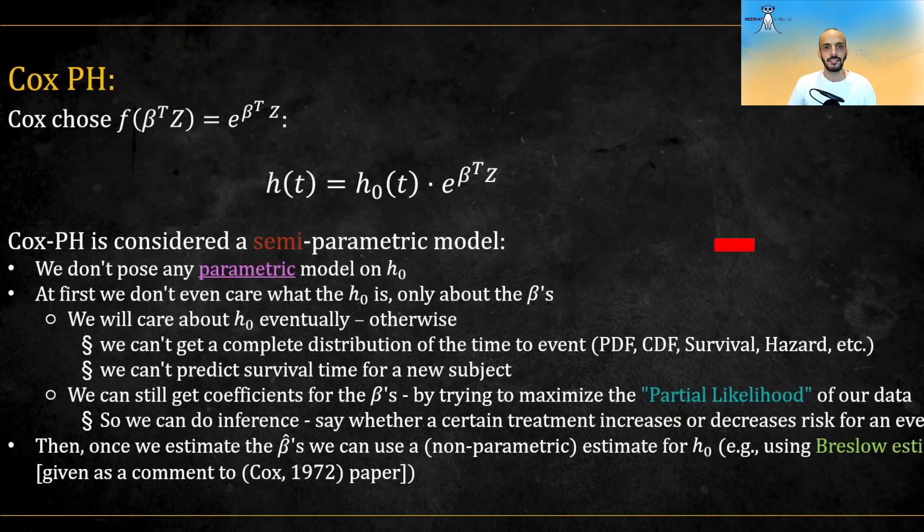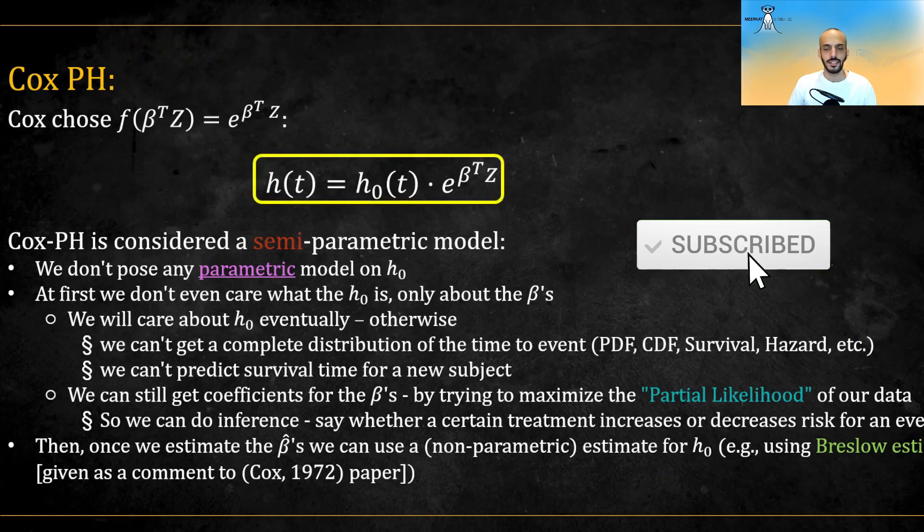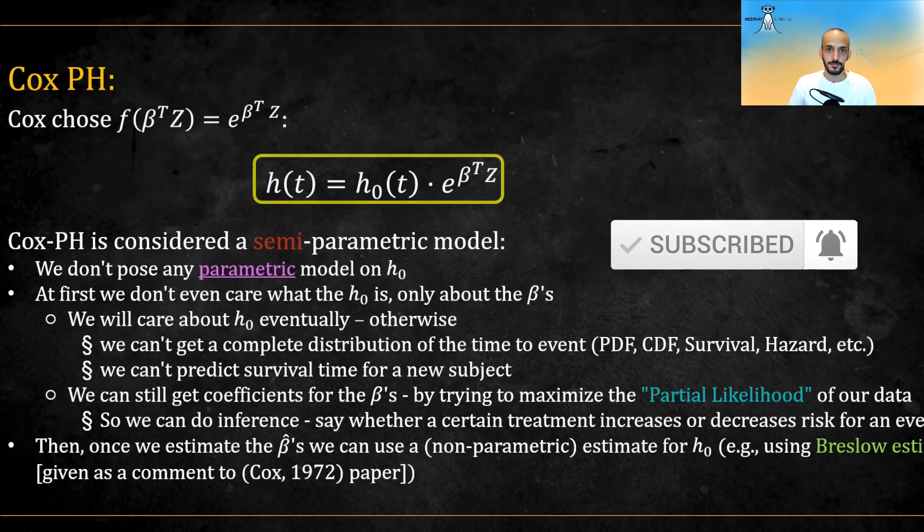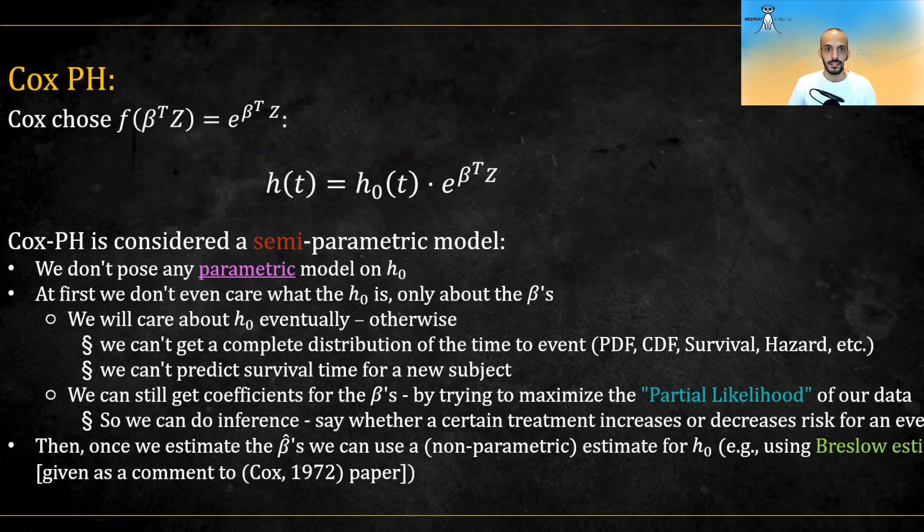The time-independent function that Cox chose is the exponential function, so the proportional model looks like this. This model is considered semi-parametric. This is because we don't pose any parametric model on h0. In fact, for inference sake, we don't even care about h0. We do care about it eventually if we wish to do predictions, because without it, we don't have a complete distribution.